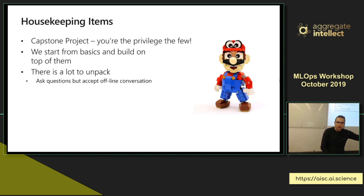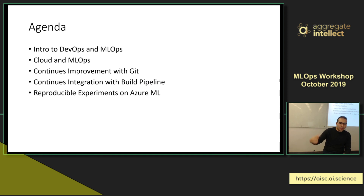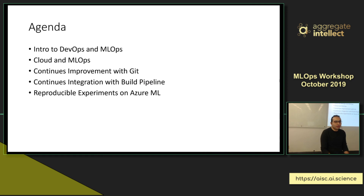If some questions are not really related to MLOps, or there are questions that can be better addressed after the session, please accept that — we will follow up accordingly. Today we're going to discuss DevOps and MLOps, some descriptions and definitions. We'll discuss why we picked the cloud rather than working completely on local computers. Then we'll discuss GitHub, continuous improvement, continuous integration, and GitOps in general. Then we'll build the first DevOps pipeline, and finally discuss reproducible experiments and how to build them on Azure ML, followed by other cloud providers.